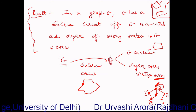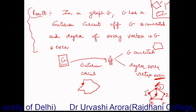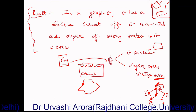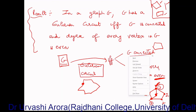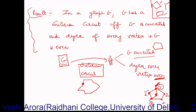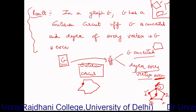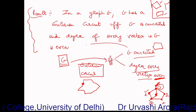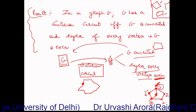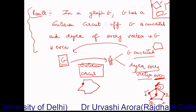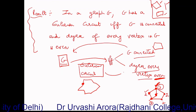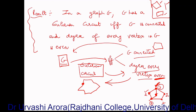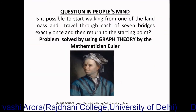A graph G has a Eulerian circuit if and only if G is connected and the degree of every vertex is an even number. The converse of this result is also true: if graph G has a Eulerian circuit, then these two conditions will hold, and if these two conditions hold, the graph has a Eulerian circuit.